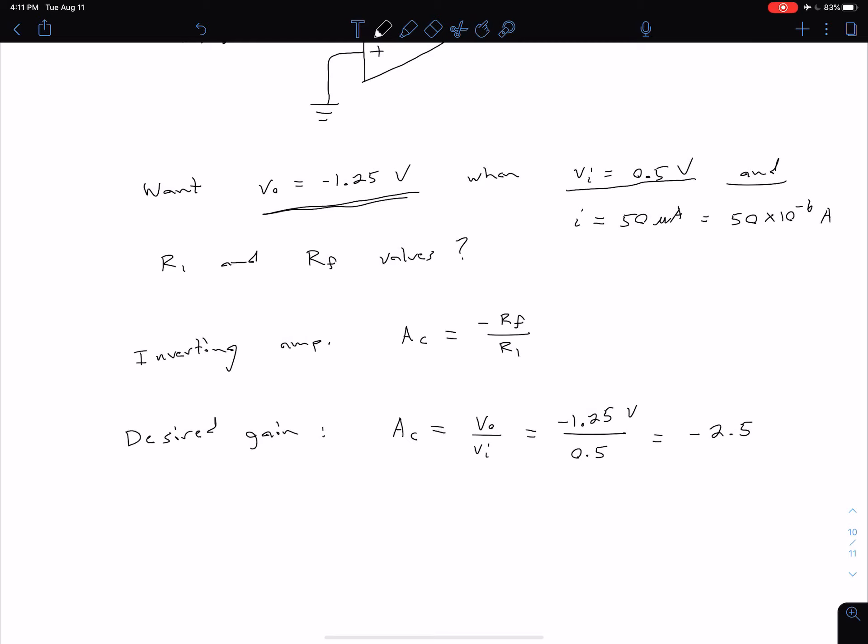So from that, we can see our desired closed-loop gain is going to be negative 2.5. And that's going to be dimensionless because here we have our two items in volts, which will cancel out. So we get a dimensionless gain, as expected.